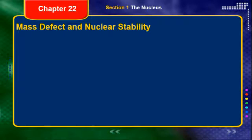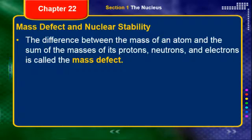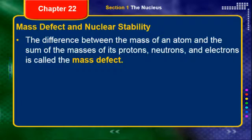Now, on to these two big terms: mass defect and nuclear stability. If you were to take the sum of the masses of the individual parts of a nucleus — meaning the sum of all the protons, all the neutrons, and all the electrons in an atom — that would actually not equal the mass of the atom as a whole. The mass of the atom is actually going to be a little bit less than that. The atom should equal the sum of its parts, but that's actually not the case. That difference between what you think the atom's mass should be and what it actually is, is called the mass defect.